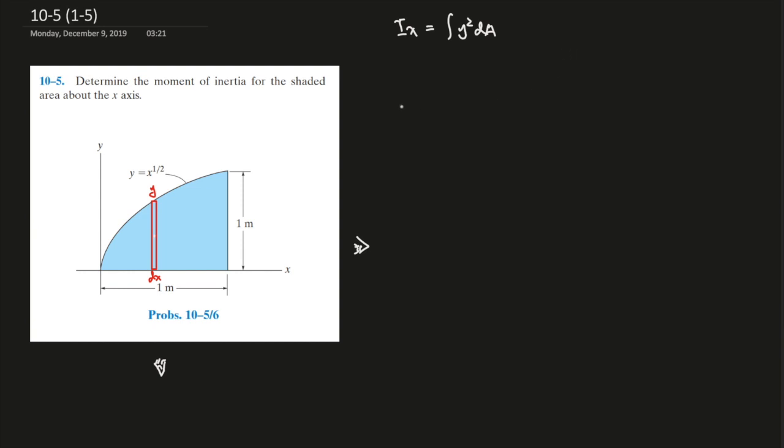So that would be equals to dI_x. dI_x equals 1/12 times base times height cubed, so base is dx and height is y³, plus the area times distance squared.